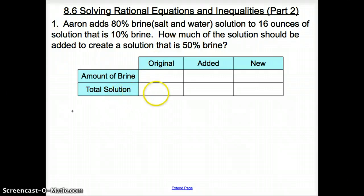I'm going to start off with the original total solution. Aaron adds 80% brine, that doesn't tell me how much original solution. We have 16 ounces of total solution at first, that's what we started with. Now let's see how much is added. Do we know how much is added?